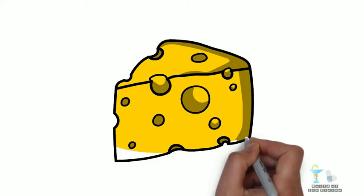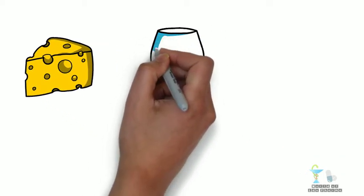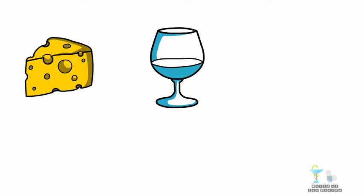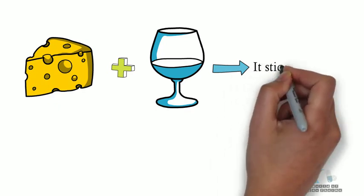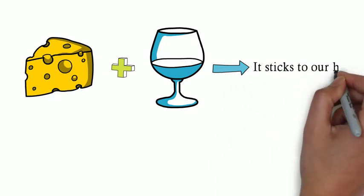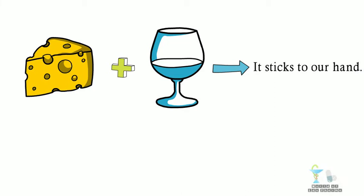Let us consider a situation in which we have a piece of cheese and water set aside. When we squeeze the cheese with our hands it sticks to our hand. We try to wash our hand with water. It is not working at all. The reason behind this is that water is a polar molecule while cheese is a non-polar one, so they usually do not react with one another.